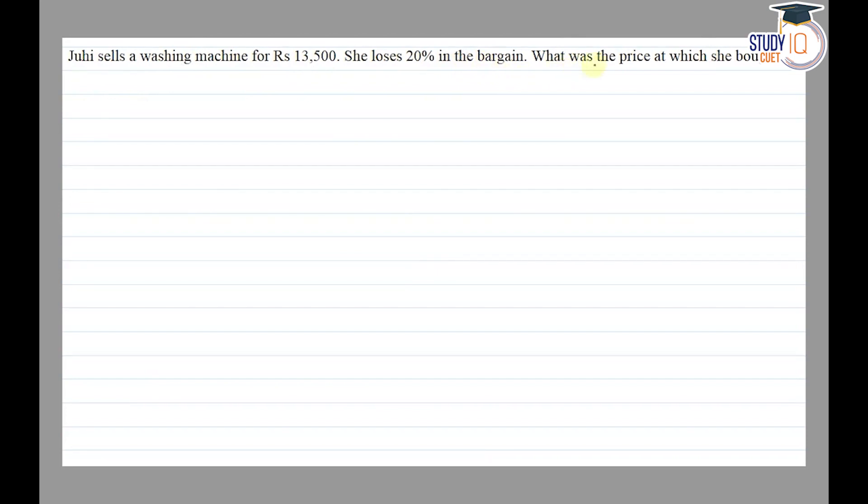What was the price at which she bought it? So we have given SP is equal to 13,500 and we have loss percent given, 20%. And we have to find out what was the price at which she bought it, means we have to find out here CP.